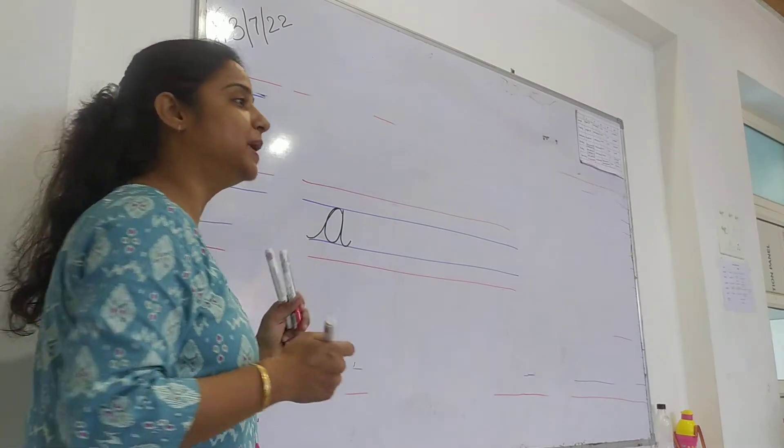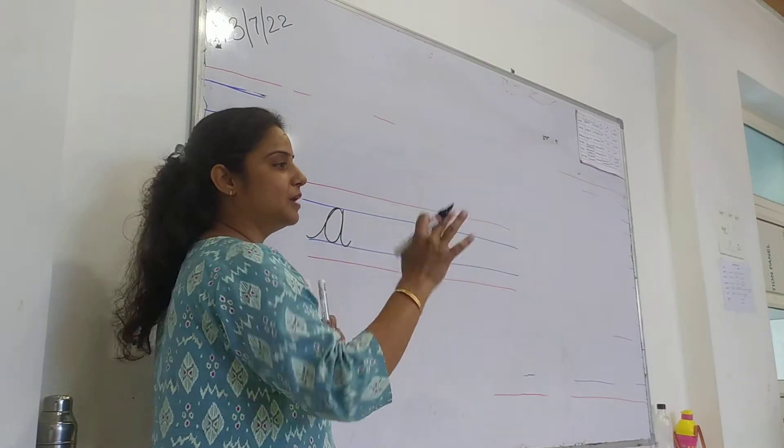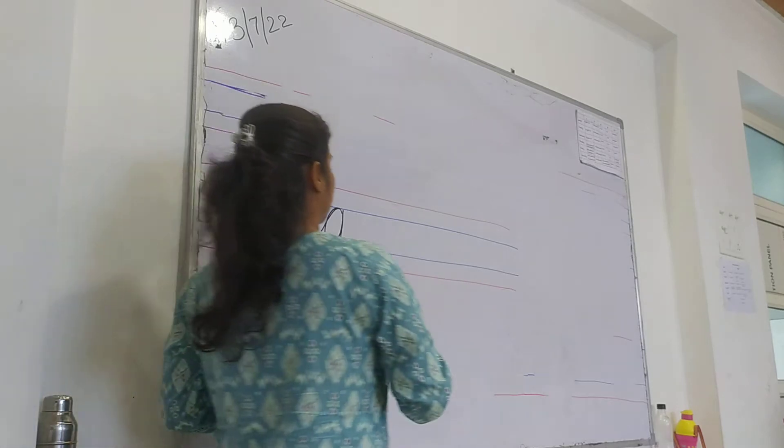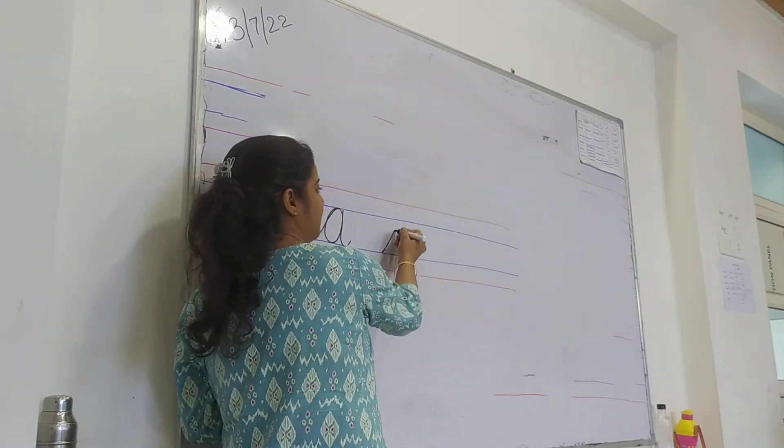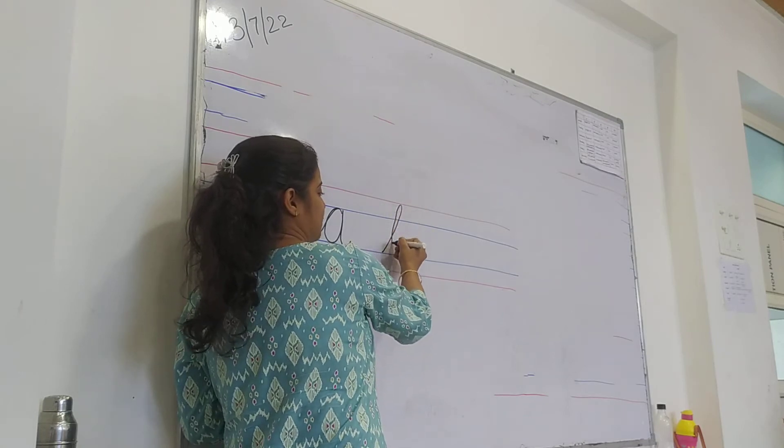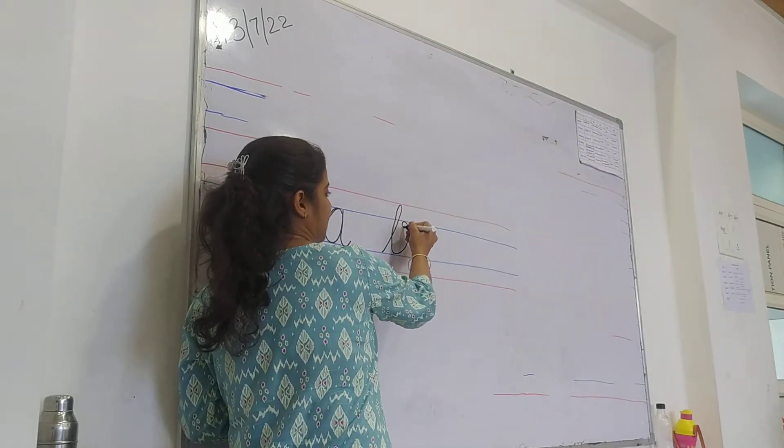Now how do we write B? Look here. How do we write B? B will go up, up, down, up, up.